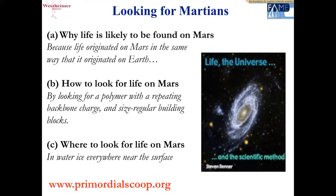So there you are: why life is likely to be found on Mars — because life likely originated on Mars the same way it originated on Earth, and Mars may actually be a better place for life to emerge. How to look: by looking for a polymer with repeating backbone charges and size-regular building blocks — the charges let you concentrate it, then you analyze what you've concentrated to make sure it fits the Schrödinger aperiodic crystal criterion. Where to look: everywhere. More details are available at primordialscoop.org.